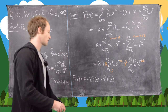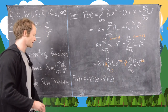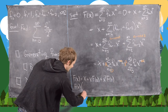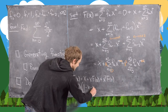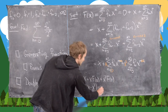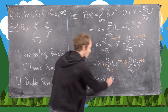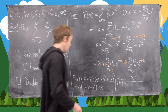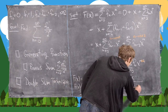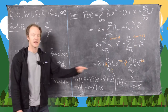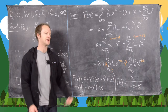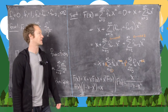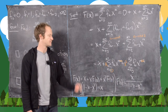Moving all F(x) terms to the left gives F(x)·(1 - x - x²) = x, so F(x) = x / (1 - x - x²). We could use partial fractions here to find a closed form for the Fibonacci numbers, but that's not our goal.